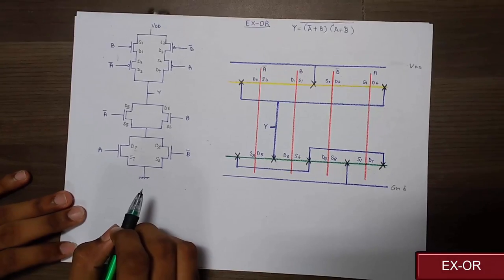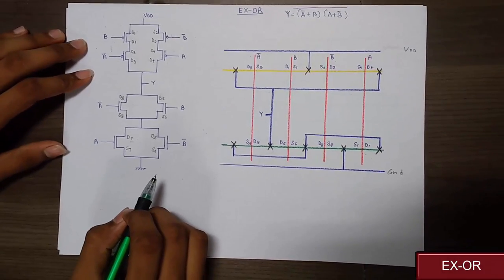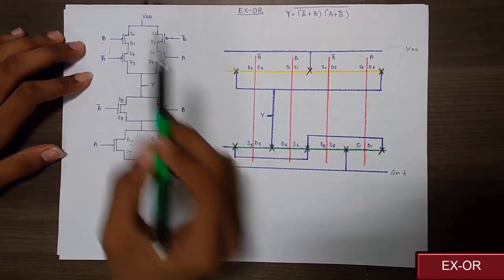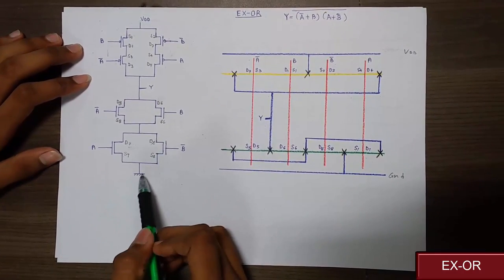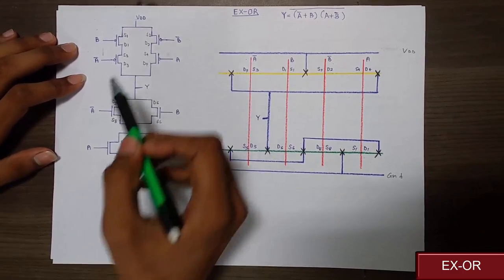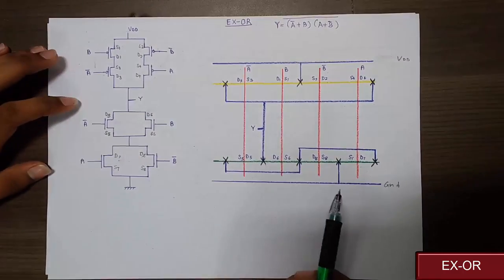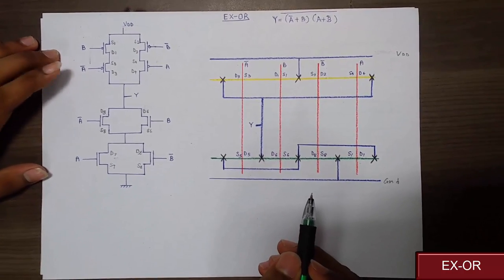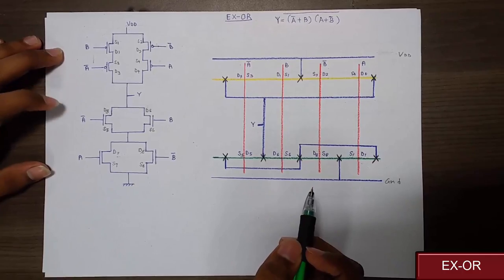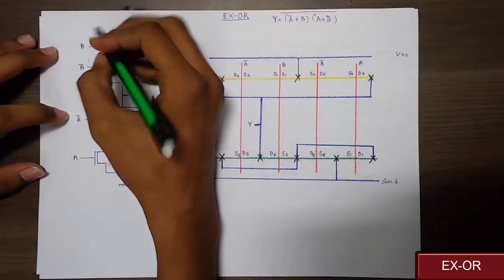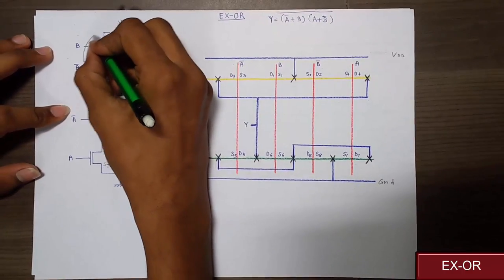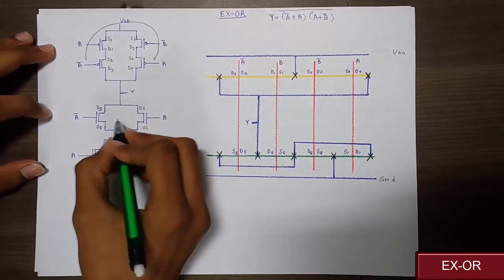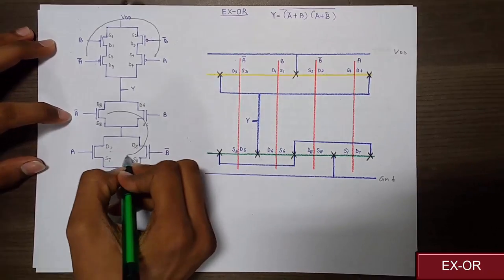Let's look into the stick diagram of XOR. As we have seen the CMOS implementation of XOR, here we have to note that the source of every PMOS is connected to VDD and the source of every NMOS is connected to the ground. A loop is required for making the stick diagram implementation such that the implementation of the inputs of PMOS and the inputs of NMOS is matched. Now let's consider the loop of A bar, B, B bar and A. Similar loop would be considered for NMOS. A bar B, B bar A.